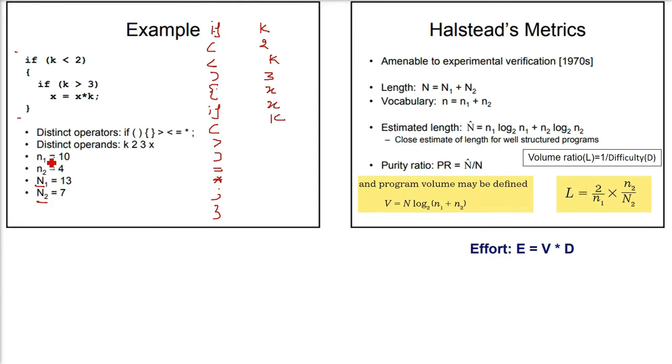Now the question is, what is small n1 and small n2? These are distinct operators and operands. Just remove the duplicacy or multiplicity. Small n1 comes from this first column with duplicates removed. if is already there, so I've crossed one and removed the other. Round bracket is also repeating. Angle bracket is not repeating. We have just removed three duplicates. Count the lines: these are 10. So 10 is the distinct operators.